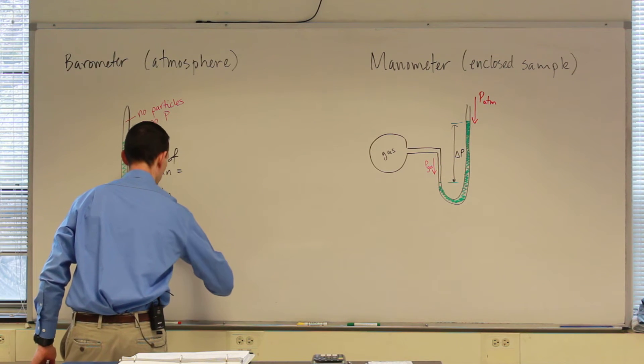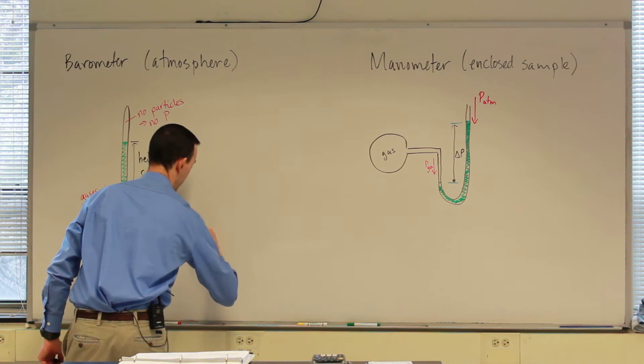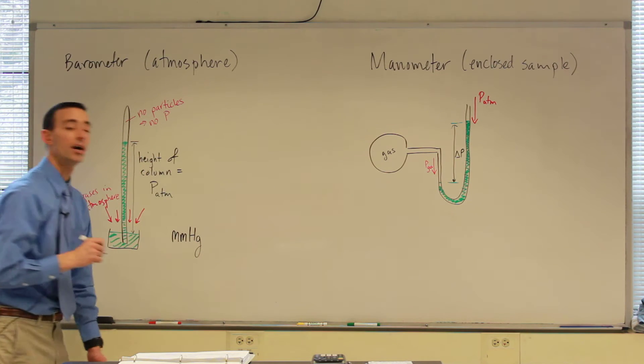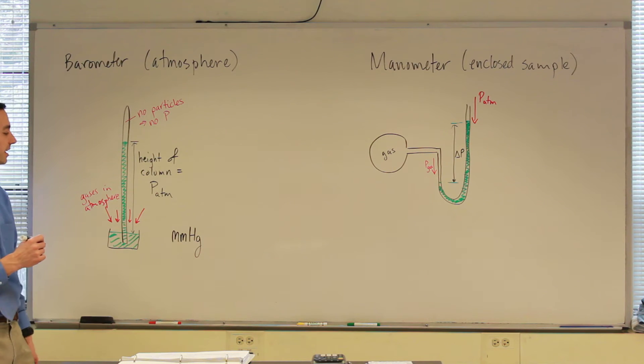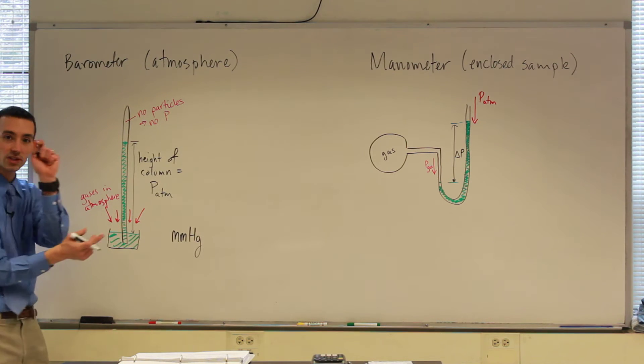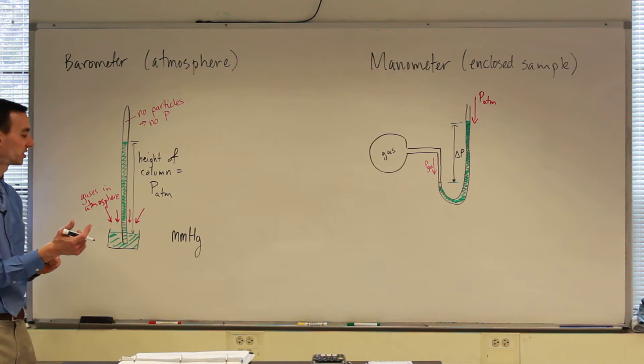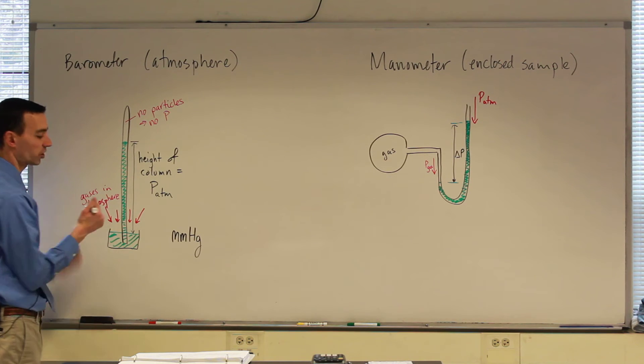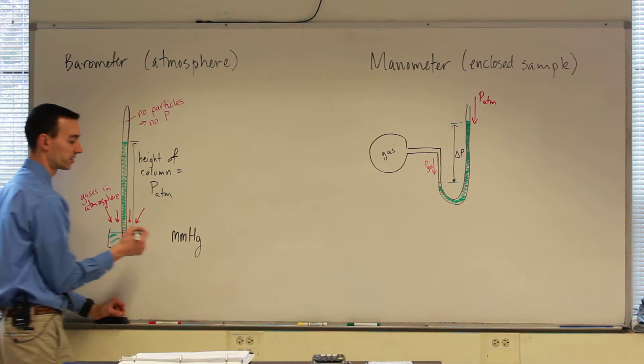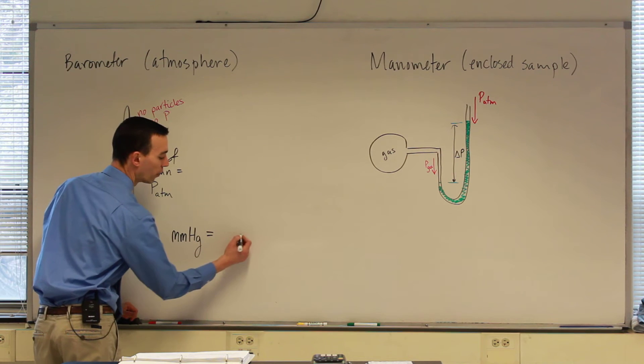And you would have measured the height of this column in meters or centimeters or maybe even millimeters. And so millimeters of mercury, mmHg, became the first commonly applied units of pressure, measuring gas pressures. Because millimeters is about the tiniest scale that we're used to seeing on a meter stick. And so you just measure how tall that column is in millimeters.